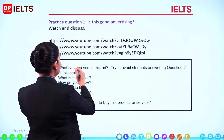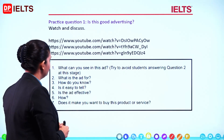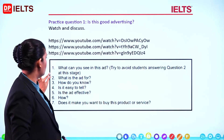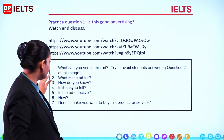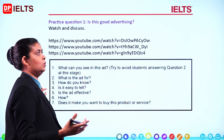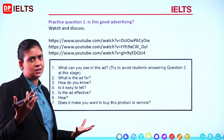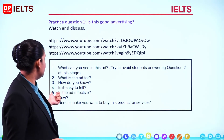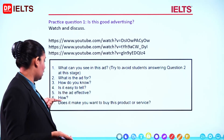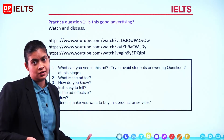After you finish question one, move on to two, three, four, five, six. What can you see in this ad? What is the ad for? How do you know that this is for, say, Pepsi-Cola, Sprite, Fanta, chocolates, or whatever? Is it easy to tell? Is the ad effective? How is it effective? Does it make you want to buy this product or service?